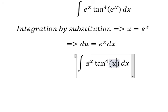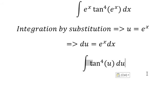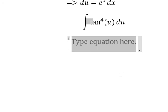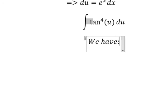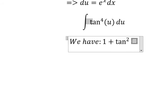We have e to the power of x, we change to u, and e to the power of x dx we change to du. Now we will have the formula: 1 plus tan to the power of 2 u equals 1 over cos u to the power of 2.